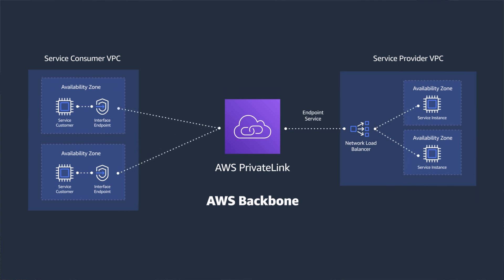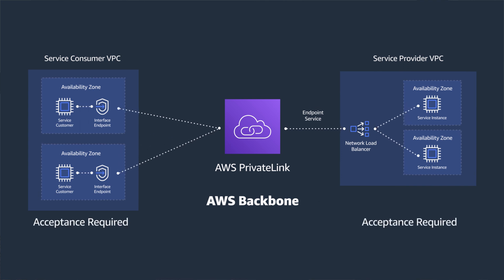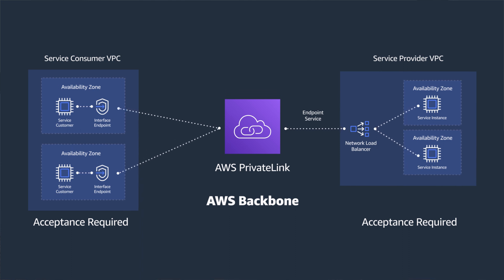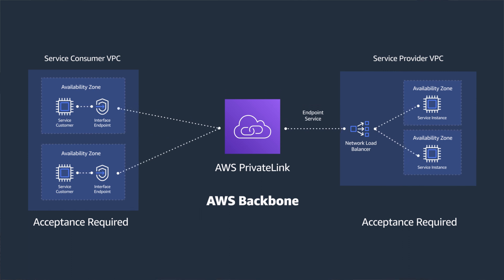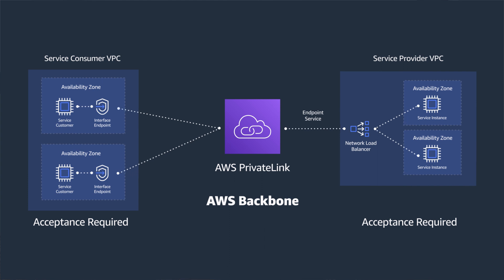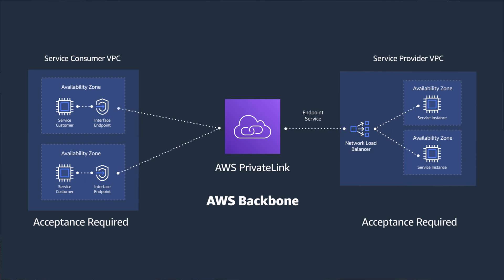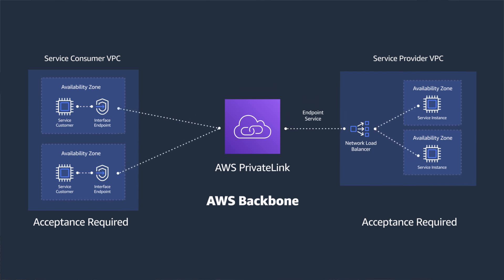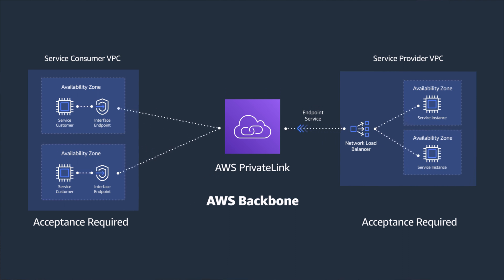You can also set the endpoint acceptance settings for acceptance required. After a mutual acceptance of the endpoint by the consumer and the provider, an interface endpoint is inserted into subnets with the consumer VPC's CIDR IP address space. DNS is also created in the consumer VPC so the endpoint requests traverse through PrivateLink. The communication is strictly unidirectional — requests start from the consumer's VPC, and the response only comes from the provider's PrivateLink service.